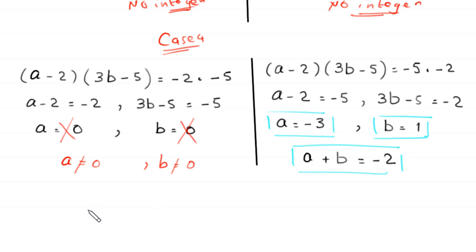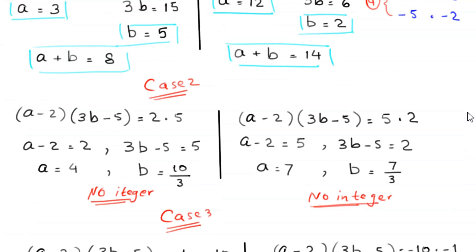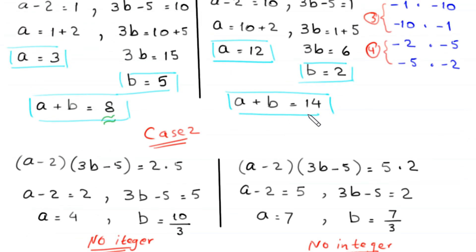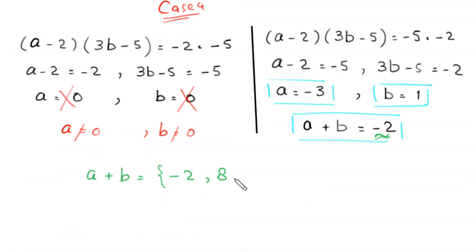Finally, the complete set of solutions for a plus b is: negative 2, 8, and 14. We have three solutions to this equation. This is the final answer.